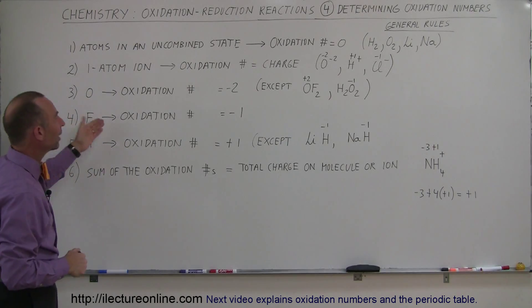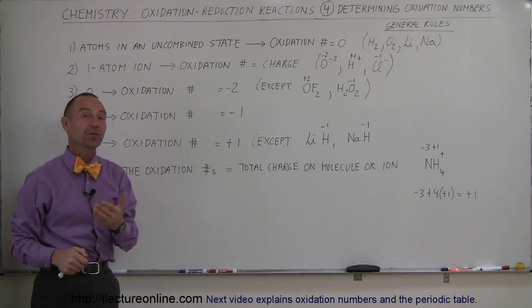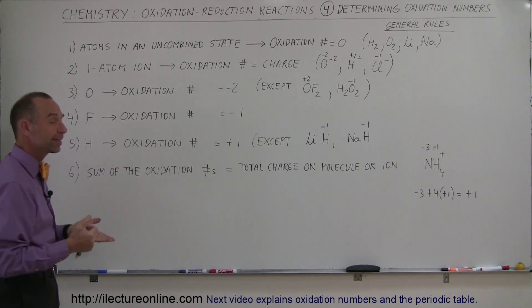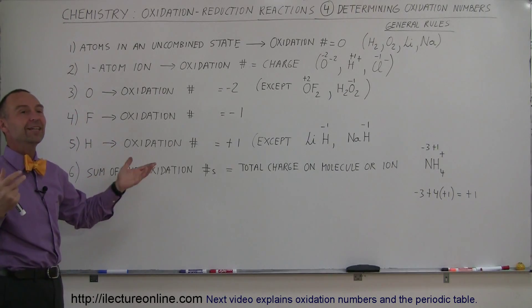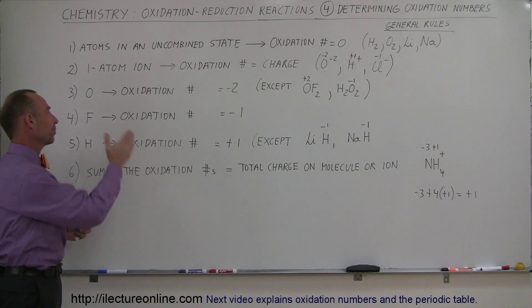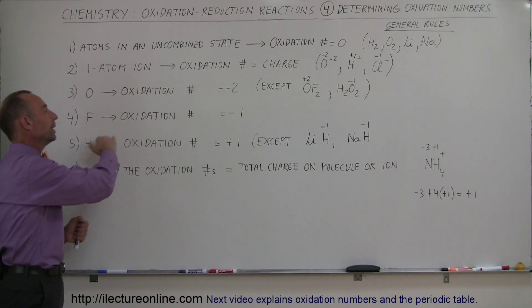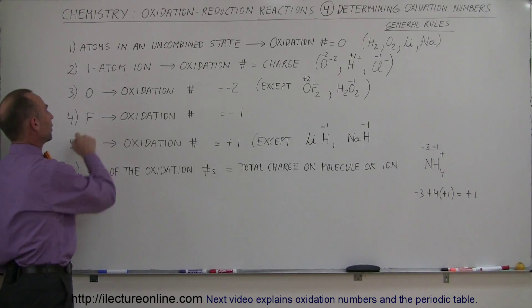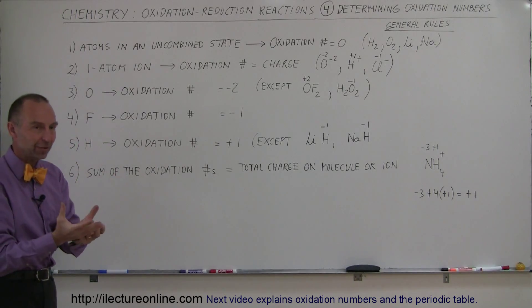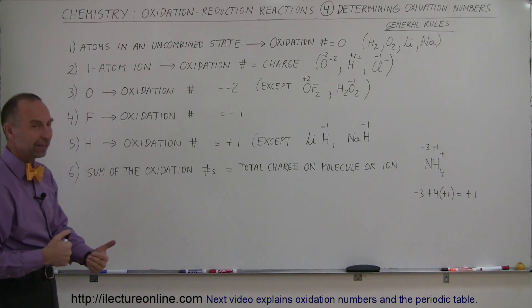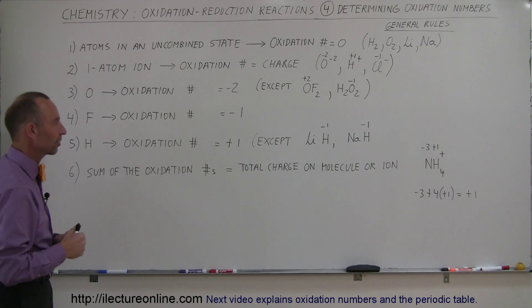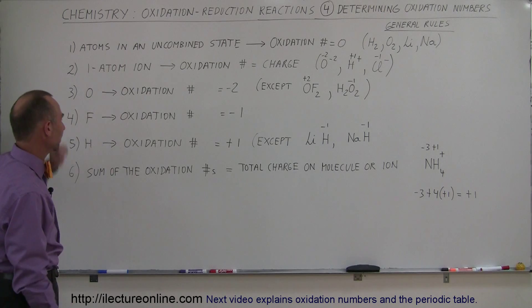Now, for fluorine, it's always negative one. Fluorine is the most electronegative element on the whole periodic table. It's the king in grabbing electrons. So when it comes to oxidation number, it always will be negative one. It will always grab an electron for every fluorine atom to satisfy its valence band, so that it goes from seven electrons to eight electrons, grabbing that extra electron, becoming negative one in charge, and having an oxidation number of negative one.